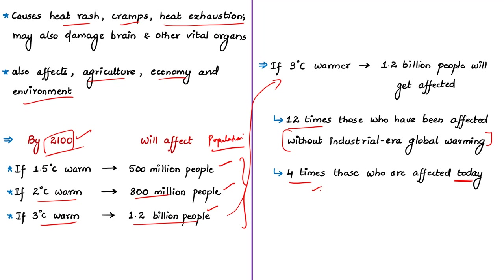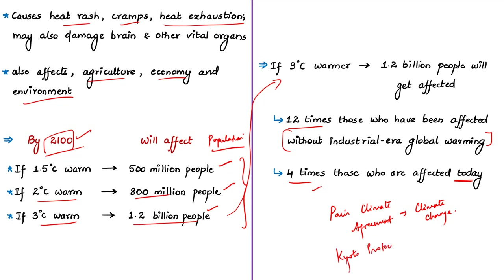The research study suggests that steps must be taken to mitigate emissions, with adaptations to reduce the damage caused by global warming. It also recommends that international agreements on global warming — like the Paris Agreement and Kyoto Protocol — must be properly adhered to in order to reduce the intensity of global warming. The Paris Agreement relates to combating climate change and accelerating investments for a sustainable low-carbon future; the Kyoto Protocol is a commitment by countries to reduce greenhouse gas emissions.